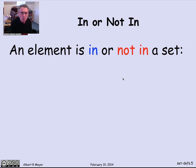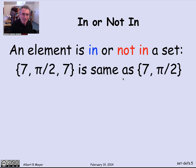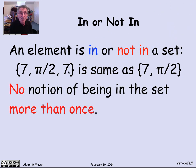So another basic thing to understand about the notion of a set is that an element is either in a set or not in a set. So if I write down {7, pi/2, 7}, this is the same description of the same set as {7, pi/2}. I'm just telling you the same thing twice here, that 7 is in the set. So no notion of being in the set more than once.